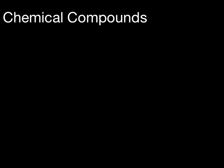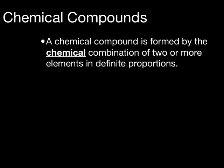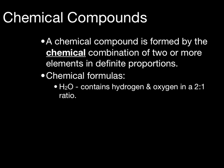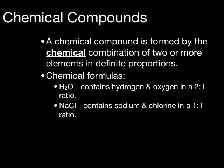Ions are very important because they help us to form chemical compounds. A chemical compound is formed by the chemical combination of two or more elements in definite proportions. For example, H2O is the formula for water — it contains two atoms of hydrogen and one atom of oxygen, combined in a two-to-one ratio. Sodium chloride, or salt, contains one atom of sodium and one atom of chlorine — a one-to-one ratio.